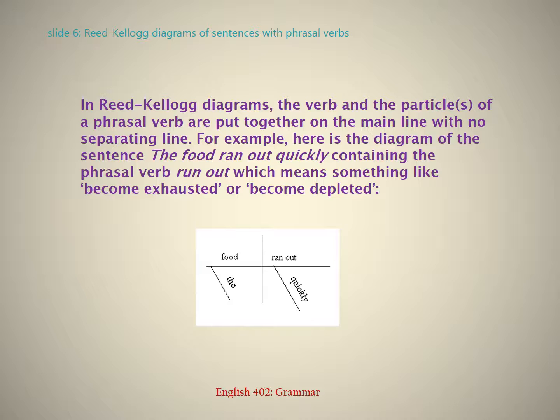In Reed Kellogg diagrams, the verb and the particle or particles of a phrasal verb are put together on the main line with no separating line. For example, here is the diagram of the sentence 'The food ran out quickly,' containing the phrasal verb 'run out,' which means something like become exhausted or become depleted.